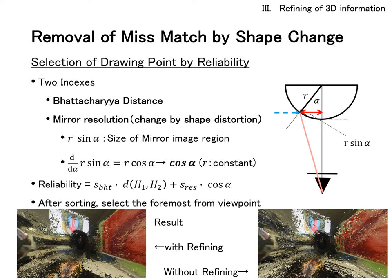For removing mismatched points due to shape distortion, we assign a reliability level to each point in the 3D information and select a drawing point based on the reliability level. We define two measures of reliability. One is the Bhattacharyya distance of the color histogram. The other is the measure that takes into account the resolution of the mirror image. It considers the change in resolution due to shape distortion and gives an index to each point. These indexes are weighted and summed for sorting. After sorting, the foremost point from the viewpoints is selected.